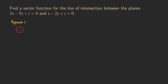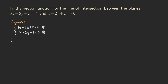First, we write down the two equations and treat it as a system of equations: 3x − 5y + z = 4 (equation 1), and x − 2y + z = 0 (equation 2). What we can do is subtract equation 2 from equation 1 — left-hand side minus left-hand side, right-hand side minus right-hand side.